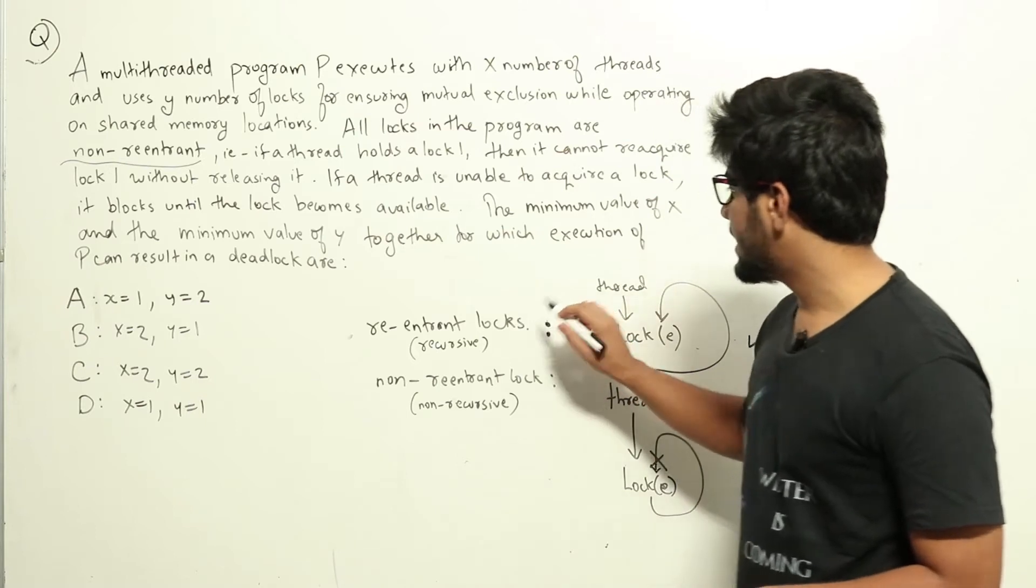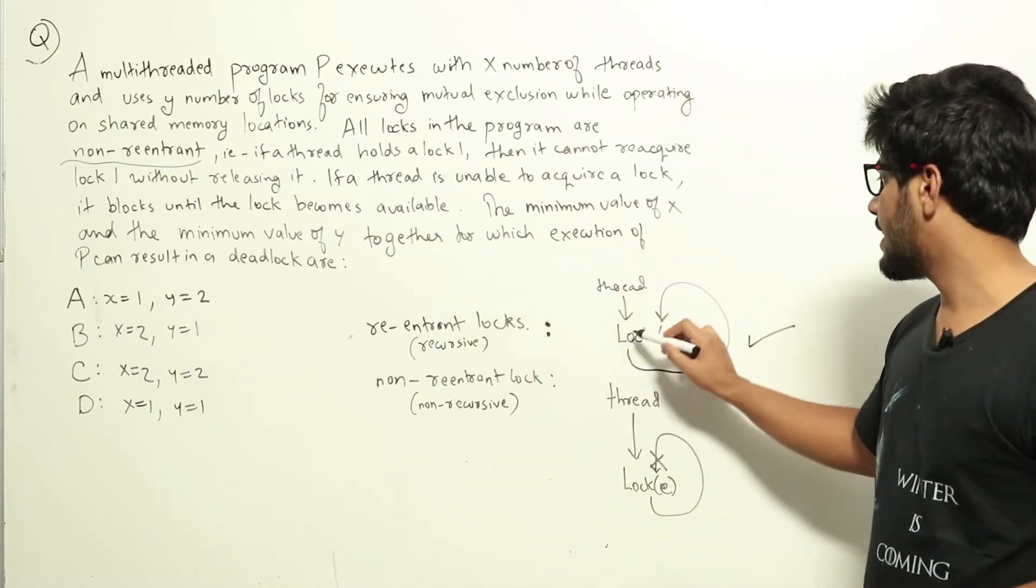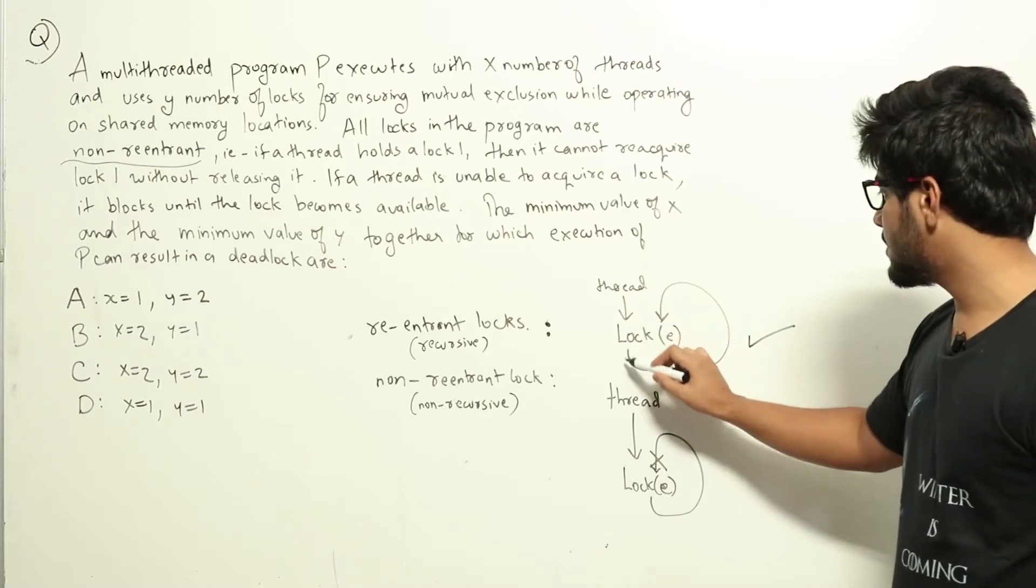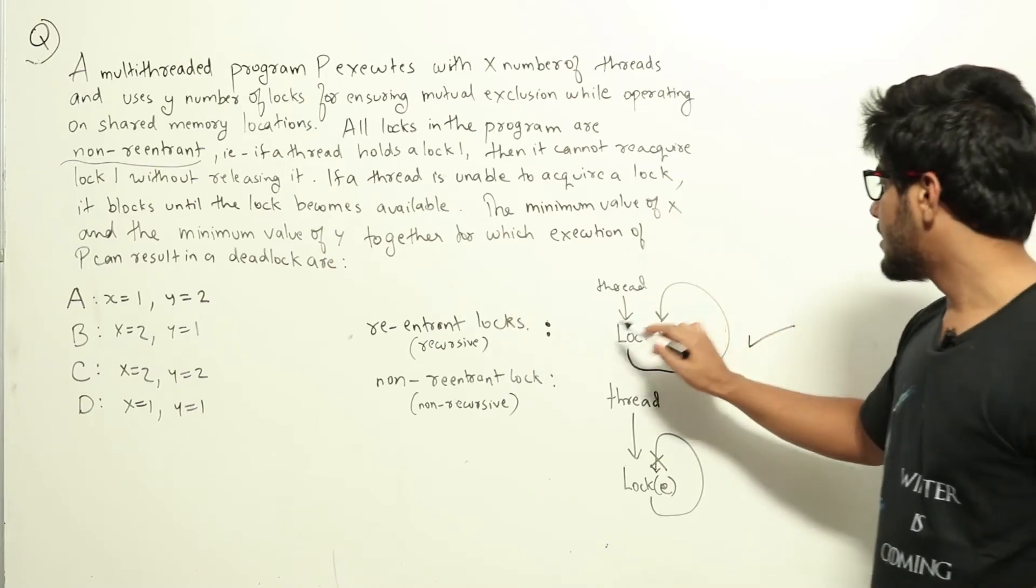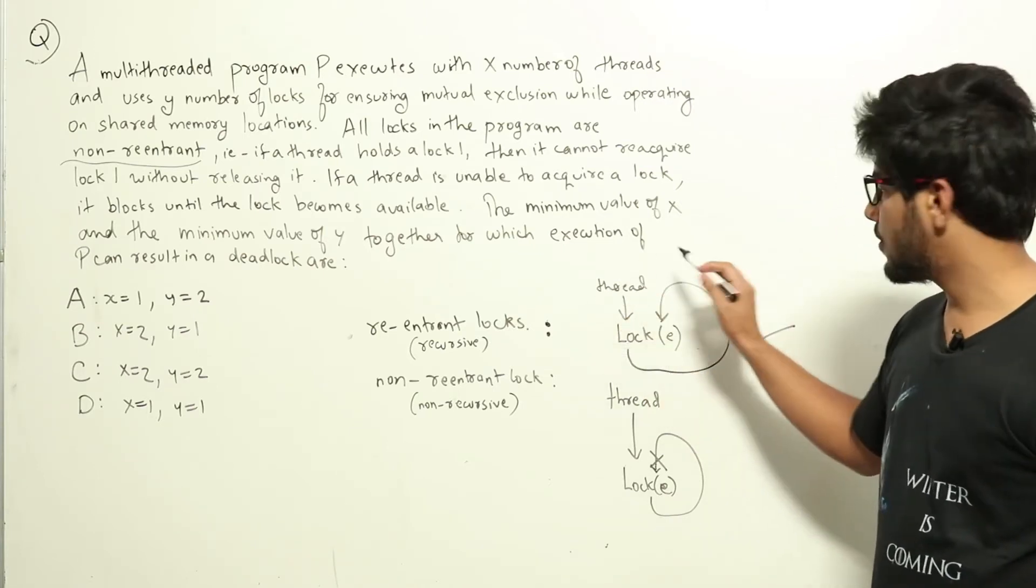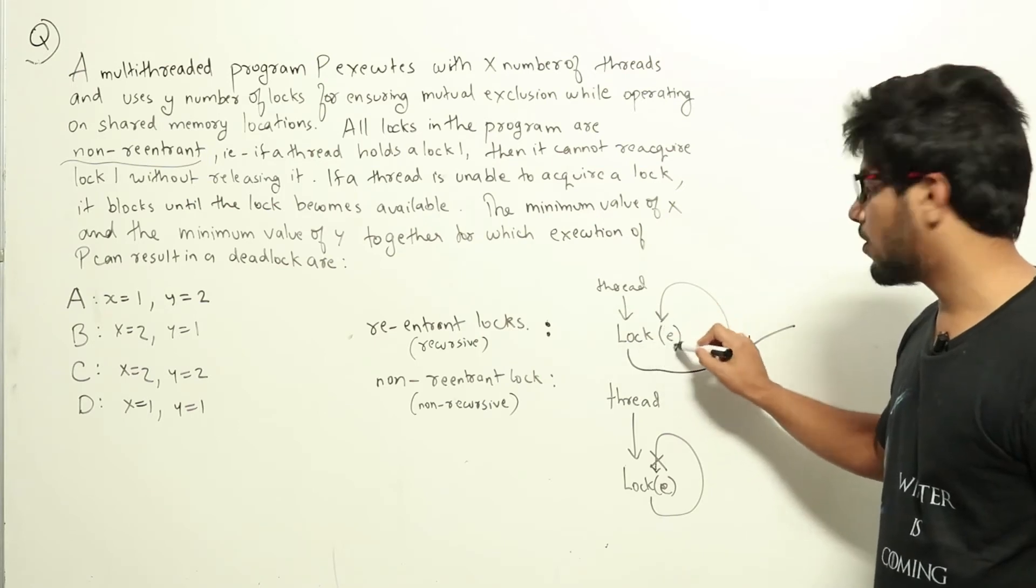The property of re-entrant locks is that suppose a thread is executing and it acquires a lock E. Suppose it continues execution and comes back and tries to re-acquire the lock again. Now this lock is already acquired by the thread. So when it tries to acquire the lock E again...